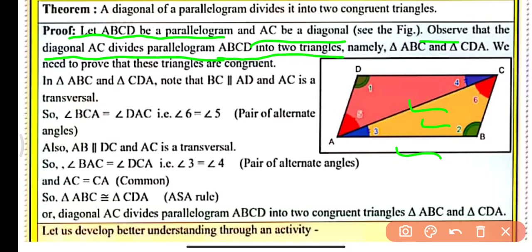You can see there is triangle ABC and triangle CDA. We need to prove that these triangles are congruent — that is, triangle ABC is congruent to triangle CDA. Note that in triangle ABC and CDA, BC is parallel to AD.